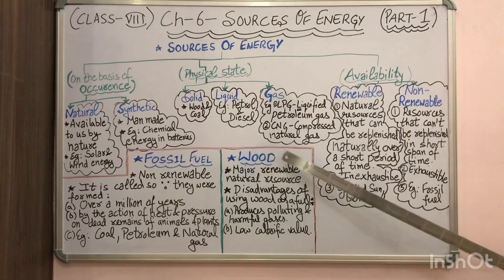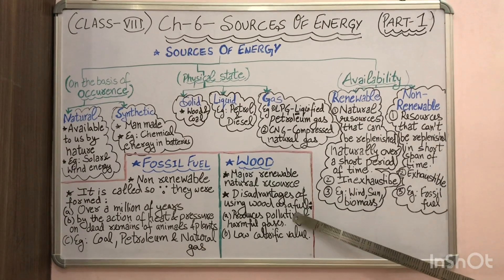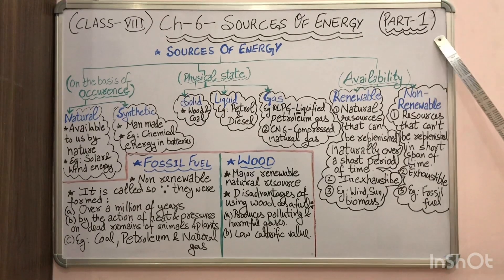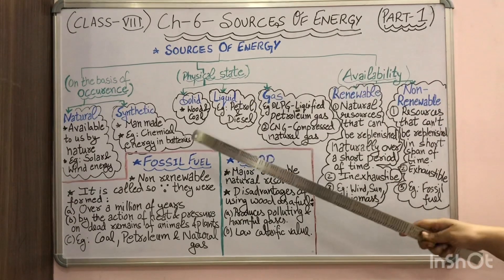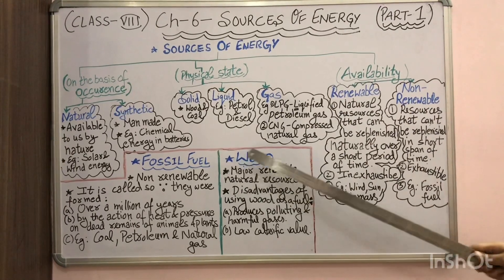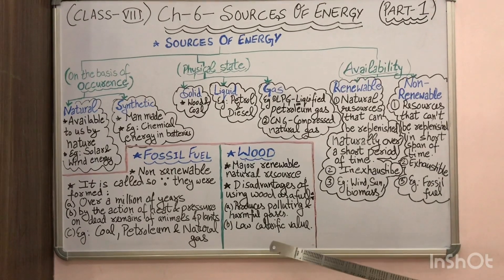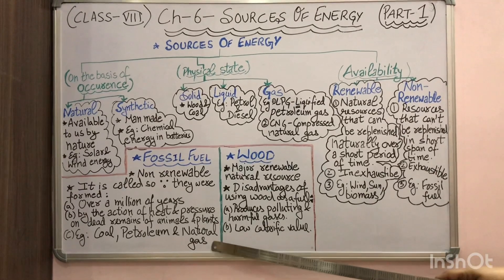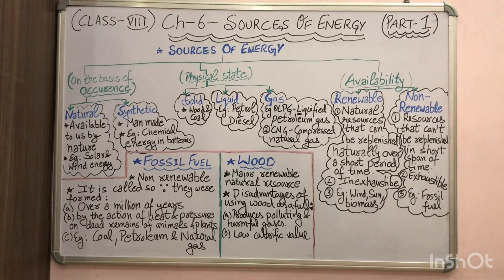We need to use a fuel which has a high calorific value and which is not too polluting or harmful for our environment. This is all for part 1 of the topic Sources of Energy. We have done the classification on 3 different bases and discussed fossil fuels and wood. In the next part 2 video, we will discuss the three main fossil fuels in detail — coal, petroleum, and natural gas. Till then, have a good day.